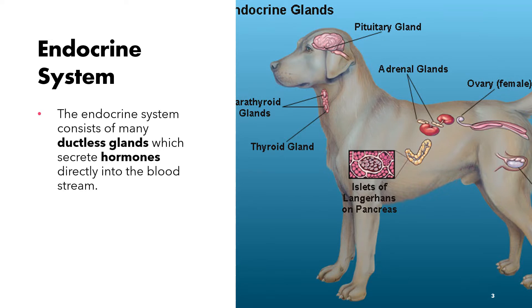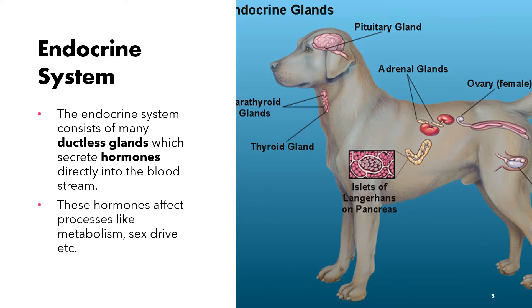The endocrine system consists of many ductless glands which secrete hormones directly into the bloodstream. Because the endocrine system glands are ductless, the hormones they secrete are directly released into the bloodstream and travel to elsewhere in the body to target organs upon which they act. These hormones affect processes like metabolism, sex drive, and others.